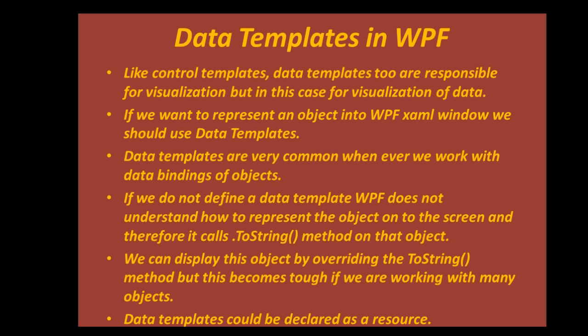This is the fourth point from the slides: if we do not define a data template, WPF calls ToString() on the object. We can display the object by overriding ToString(), but this becomes difficult if we have many objects - say 50 objects - we'd need to override ToString() 50 times. The solution is to use data templates.